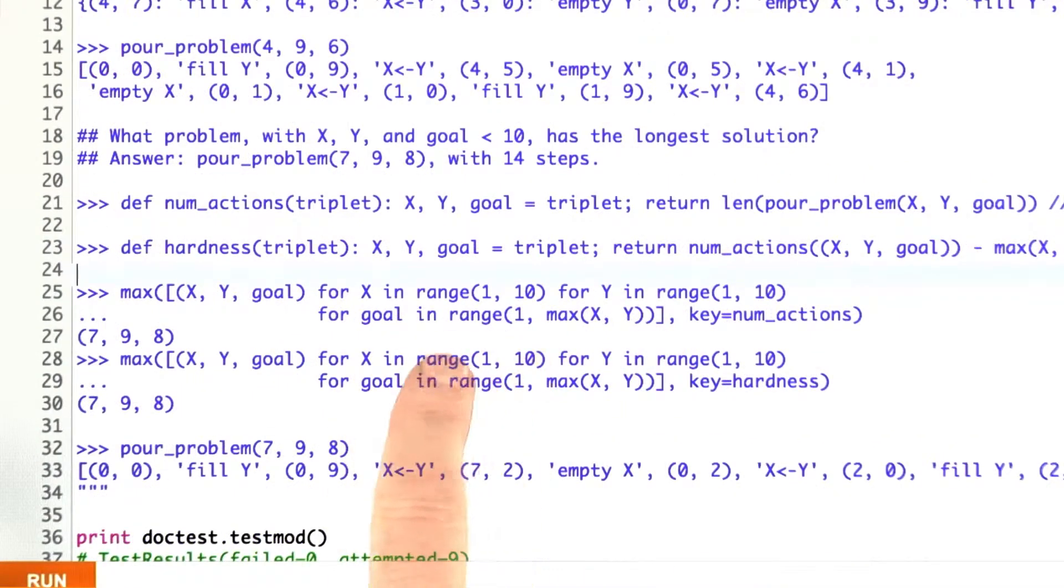We can solve problems more generally. Here I have to find the function numActions, which says given an x and y capacity and a goal, how long does it take to solve the goal, the total number of steps it's going to take? Then I asked here for all values of x and y less than 10, for all capacities less than 10, and for all goals smaller than the capacity.